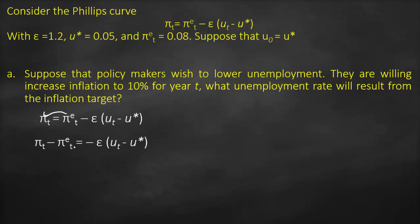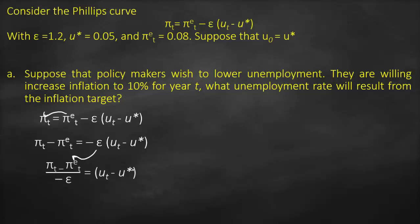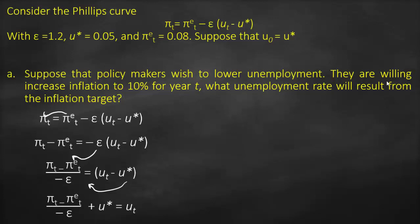Dividing by negative epsilon, and then moving negative u star to the other side with a positive sign, we arrive at the rearranged formula for unemployment: u_t equals (inflation minus expected inflation) divided by negative epsilon, plus u star.